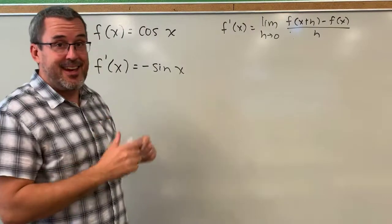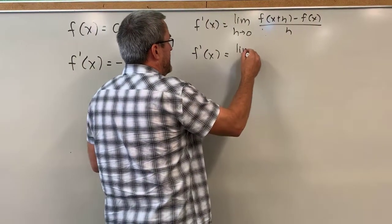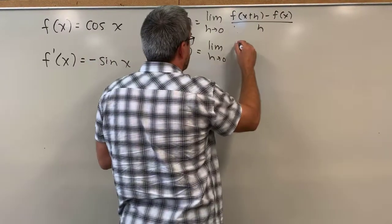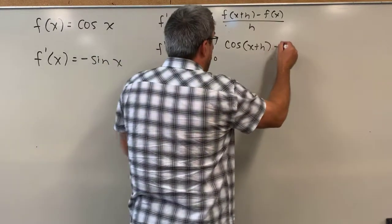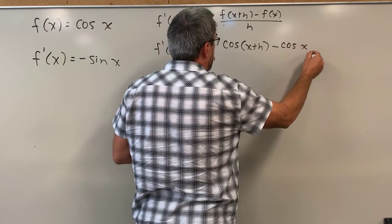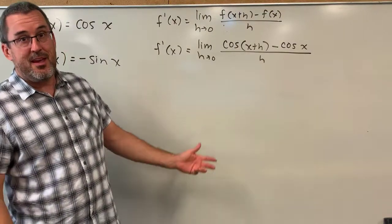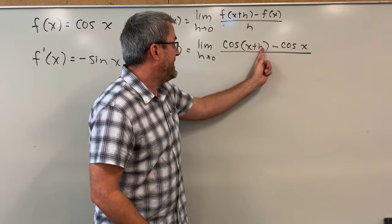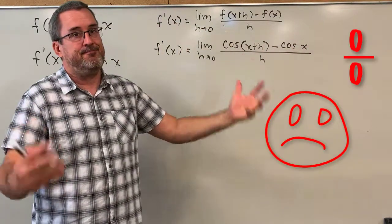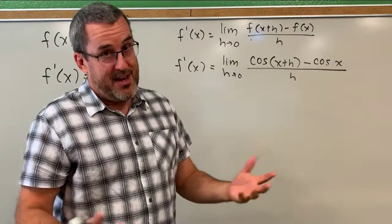The limit definition of derivative is the limit as h approaches zero of f of x plus h minus f of x all over h. Let's apply this definition. If f of x is cosine of x, we run it through the definition: f of x plus h gives us cosine of x plus h, then we subtract f at x which is cosine of x, and divide all of that by h. You might think to just plug in h close to zero — but that gives cosine of x minus cosine of x, zero over nearly zero. That's not helpful. We have to do algebraic manipulations to get this to a place where we can apply the limit.